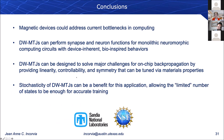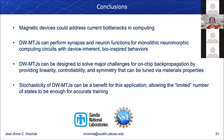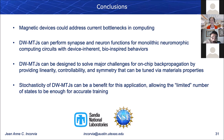In conclusion, magnetic devices could address current bottlenecks in computing. The Domain-Wall MTJ can perform synapse and neuron functions with device-inherent bio-inspired behaviors. It can be designed to solve major challenges for on-chip backpropagation, providing linearity, controllability, and symmetry that can be tuned by materials properties. The stochasticity can be a big benefit — I hope this shows that domain wall synapses may indeed have enough weight resolution to accomplish the tasks you want. Thank you.